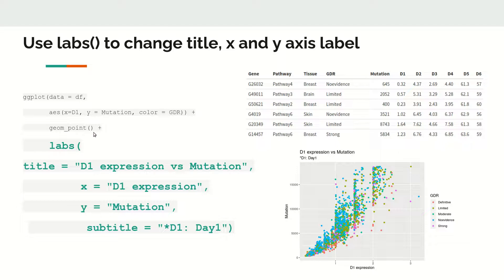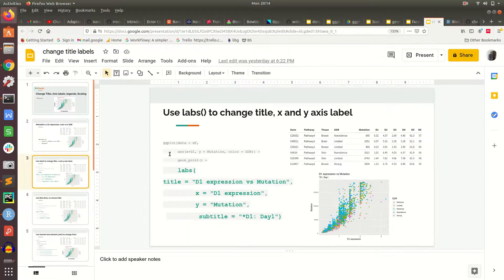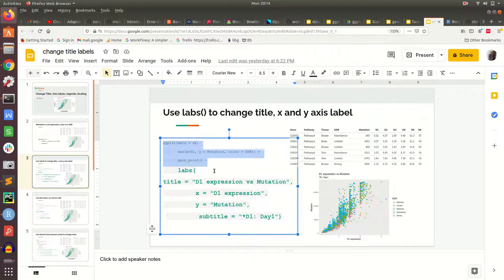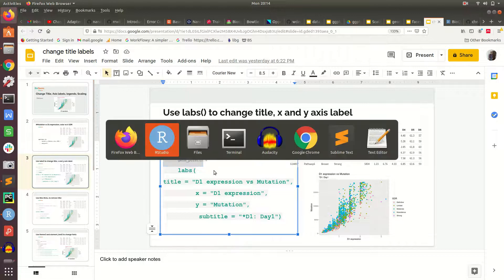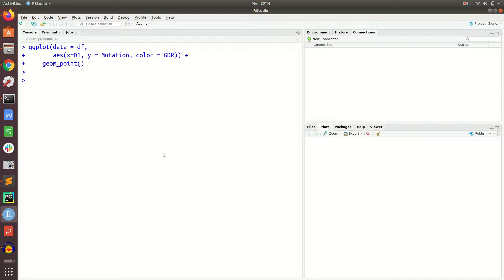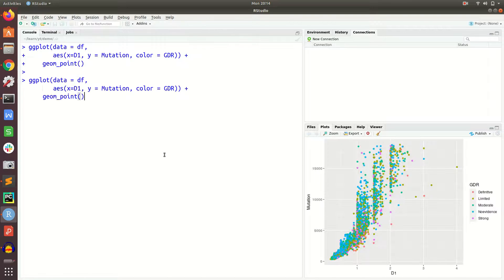We add labs as another layer on top of the plot, by which we can change the titles. We can say title equal to this, x equal to this, y equal to this. By default, the plot has taken the column name like d1 and y_mutation. So if you want to change that, we add this labs layer.